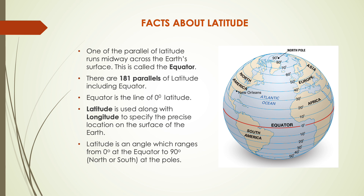The equator is the line of 0 degree latitude — it is basically a reference point. As we move towards each latitude above or below it, the degrees change. Latitude is used along with longitude to specify the precise location on the earth's surface. I will talk about longitudes in detail in our next video, but for now you should keep in mind that both are equally important to locate any place on earth. Latitude is an angle which ranges from 0 degree at the equator to 90 degrees north or south at the poles.